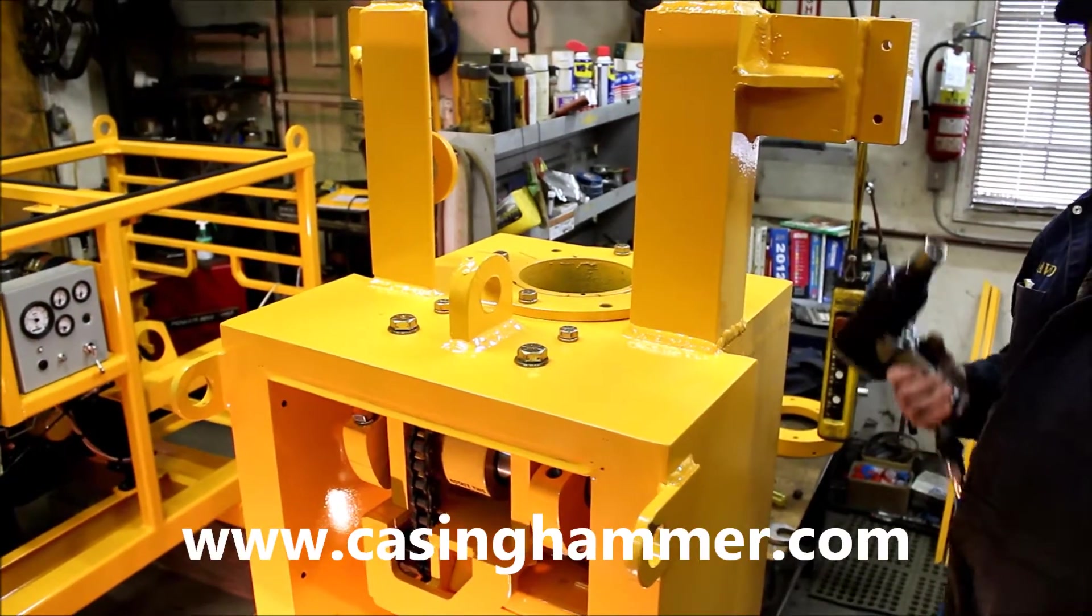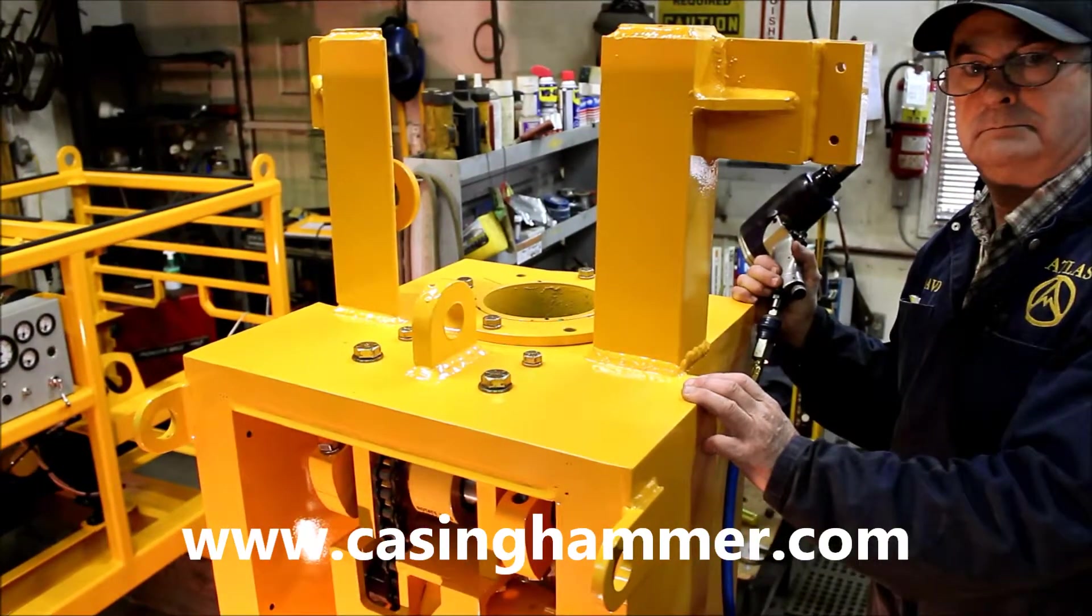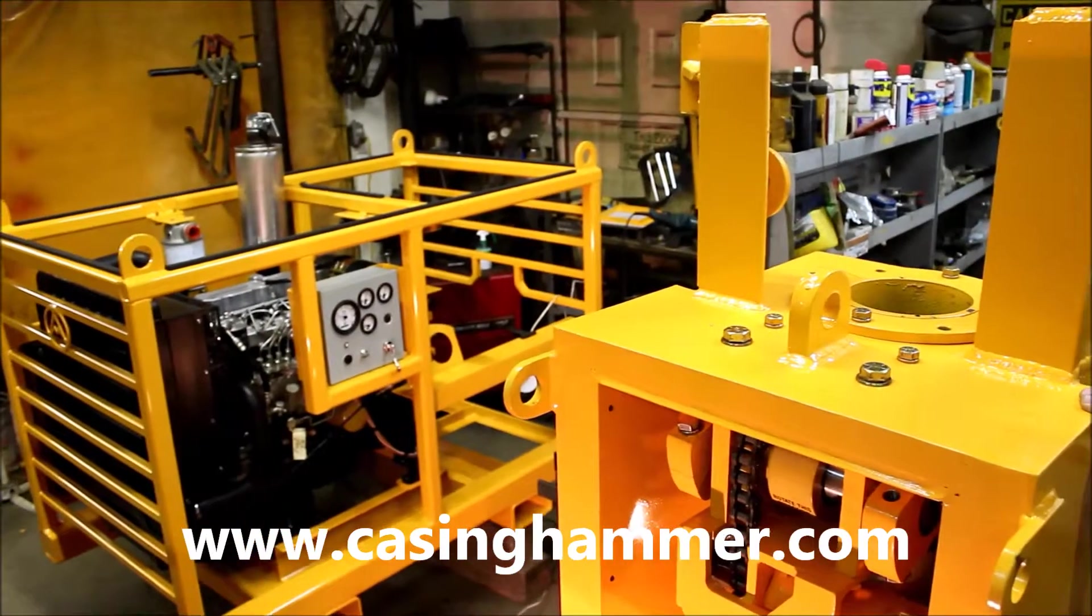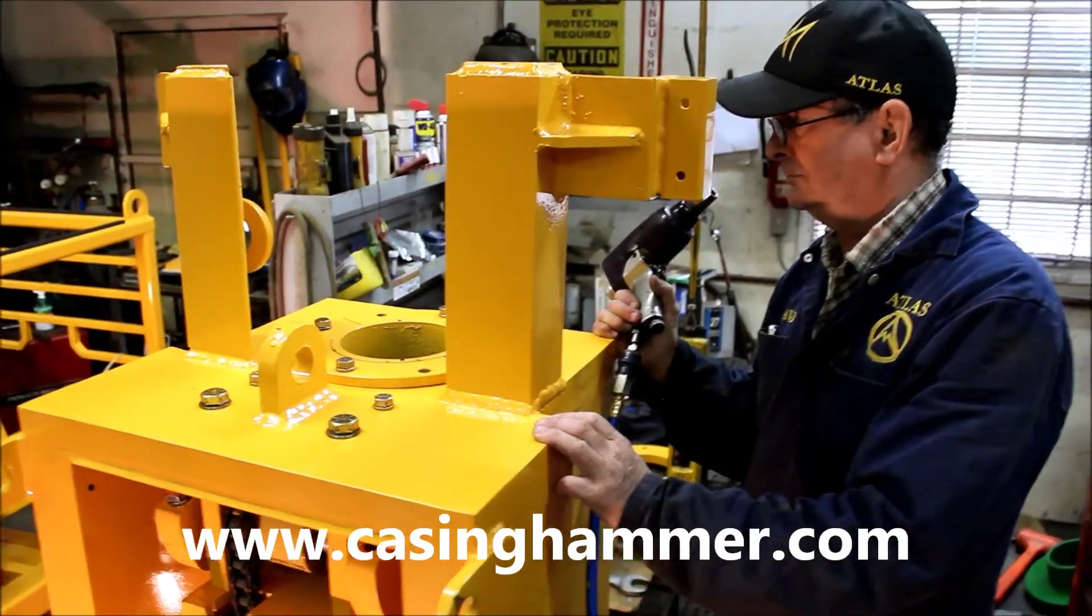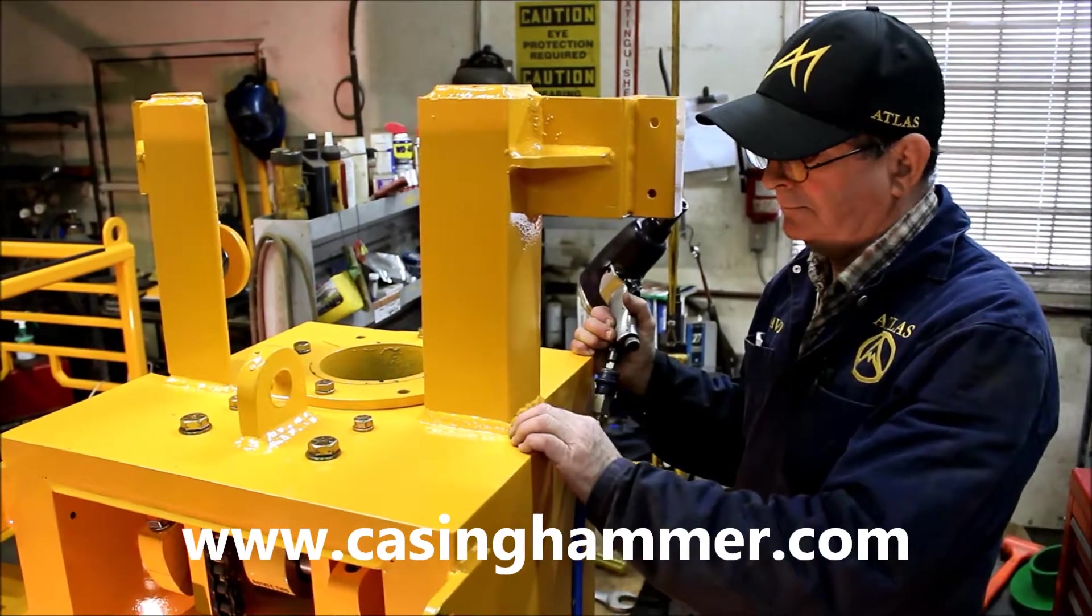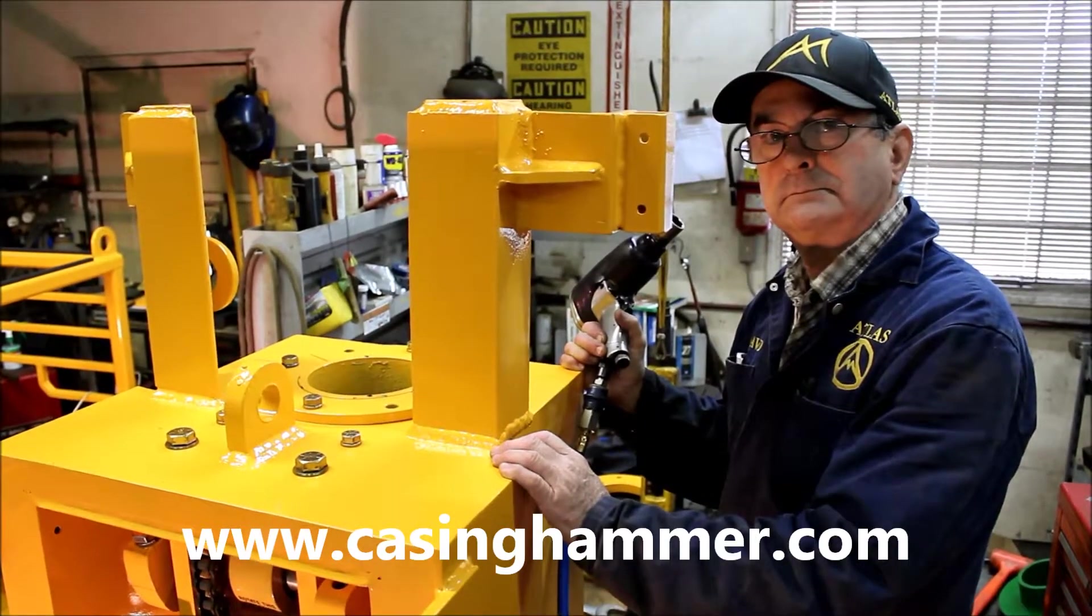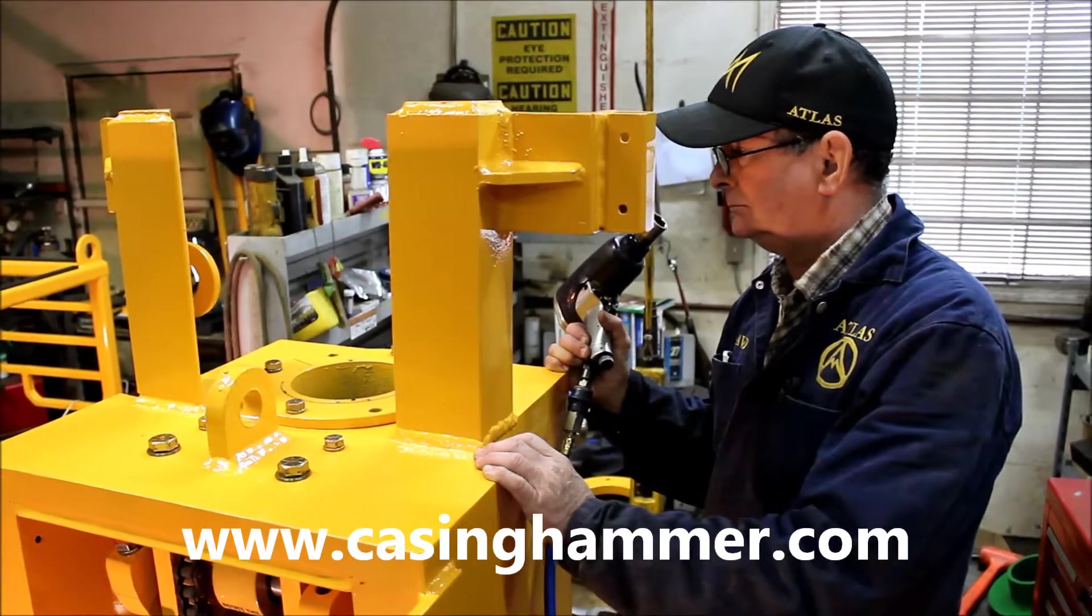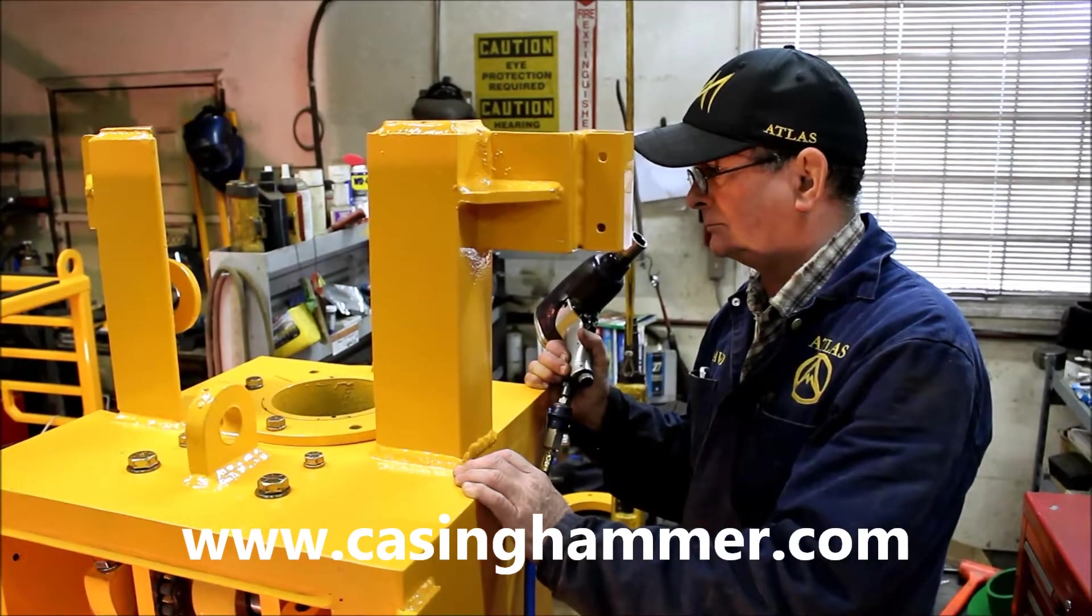We are here at Atlas Manufacturing in British Columbia, Canada. We make the Atlas casing hammers, Atlas casing jacks, hydraulic power packs and such. Today we are going to get Dave, our shop foreman and head hammer builder, to show us how to change out the bottom seal in one of our casing hammers. We have an R2000 here that we have just done a rebuild on, so I will let Dave take it away here.